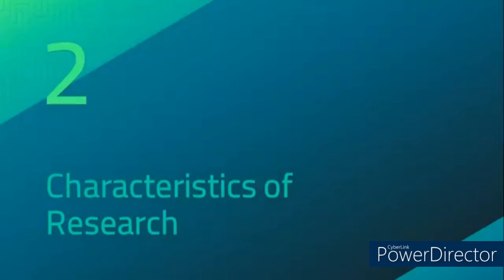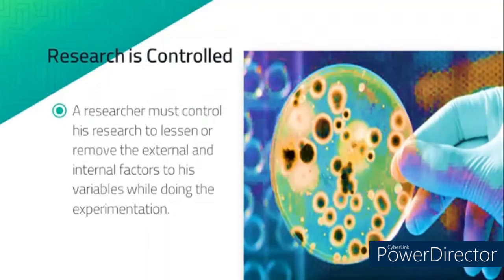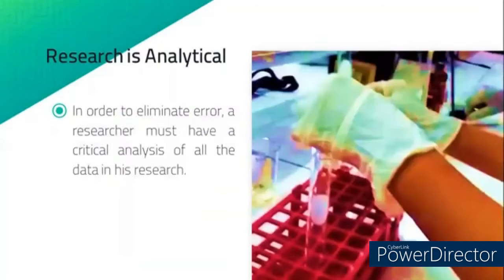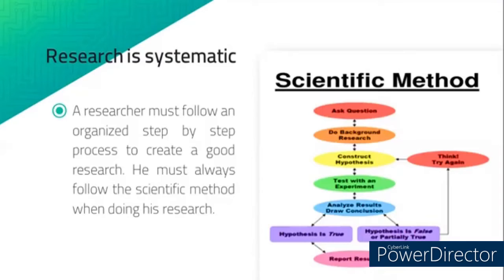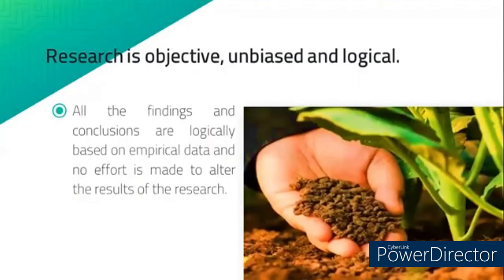Next, characteristics of research. First, research is controlled — researchers conduct their experiments inside the laboratory to control other factors that could affect the variables and lead to different results. Research is analytical — a researcher must analyze the study before, during, and after the conduct of experimentation to eliminate errors when publishing. Research is systematic — science is a systematized body of knowledge, so research must follow a systematized procedure to create better results and eliminate bias. Research is objective, unbiased, and logical.